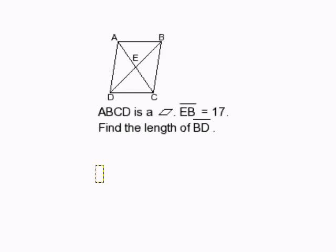How to Find the Missing Part of a Diagonal Inside of a Parallelogram. The first thing you need to remember is that diagonals in a parallelogram always bisect each other. Remember that bisect means to split in half exactly, evenly.